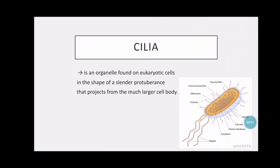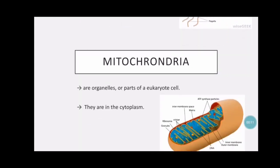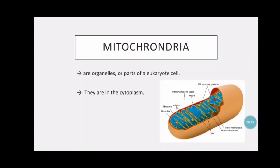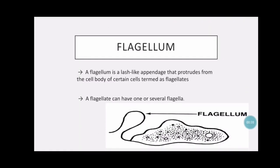Cilia is an organelle found on eukaryotic cells in the shape of a cylindrical protuberance that projects from the much larger cell body. Mitochondria are organelles and parts of eukaryotic cells; they are located in the cytoplasm. Flagellum. A flagellum is a tail-like appendage that is produced from the cell body of a certain cell, termed a flagellate. A flagellate can have one or several flagella.